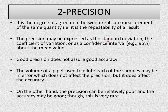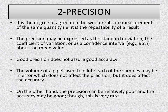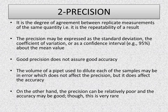Precision may be expressed in terms of standard deviation, the coefficient of variation, or as a confidence interval — for example, 95% about the mean values. An important thing to remember is that good precision does not assure good accuracy. If the results are very precise, it doesn't mean that the method will be accurate as well.